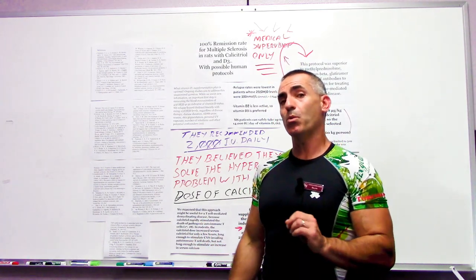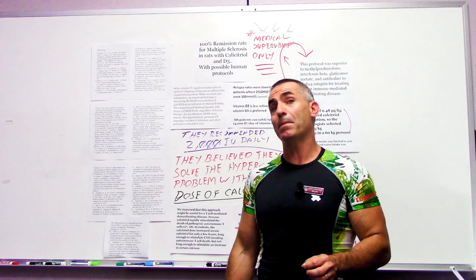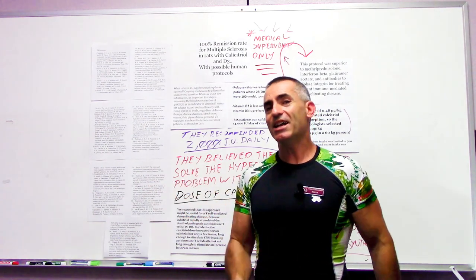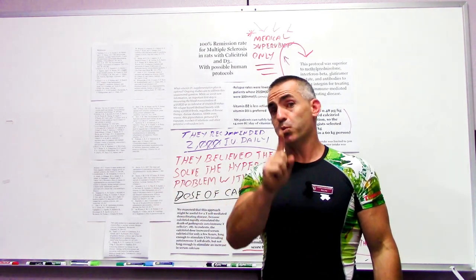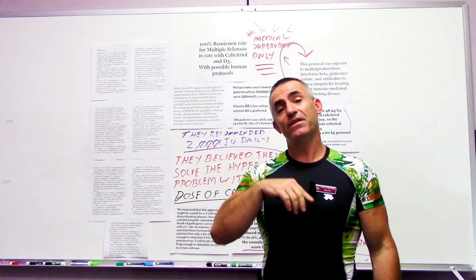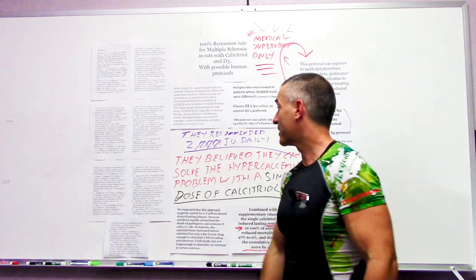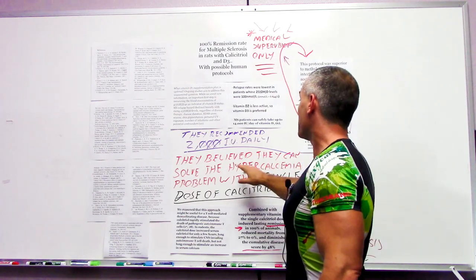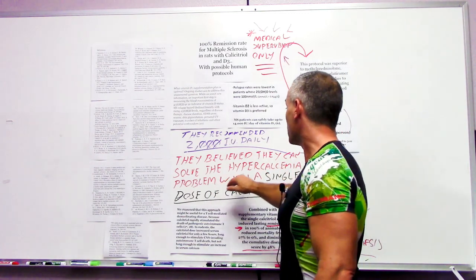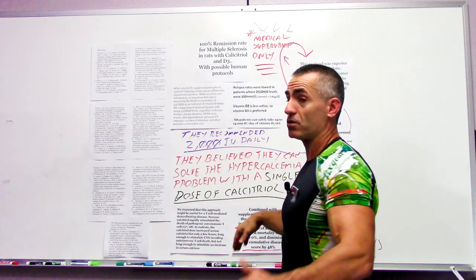They recognized they couldn't use calcitriol on a regular basis because calcitriol injections created far more damage than the MS did because of the hypercalcemia. However, what they wanted to do is see what would happen if they took animals and just injected calcitriol just once and then followed it up with oral D3.